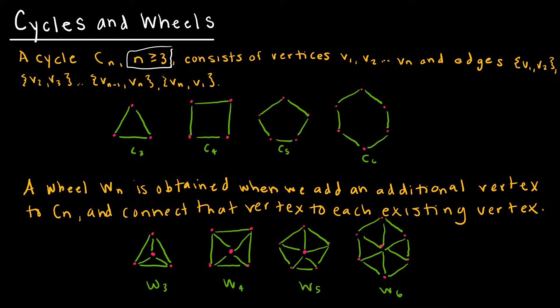A cycle essentially says that I'm going to continue to connect v1 to v2, v2 to v3, v3 to v4, v4 to v5, connecting them in the correct order all the way till I get to my last value, vn minus 1 to vn.